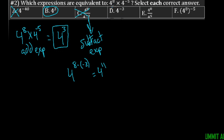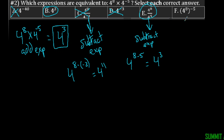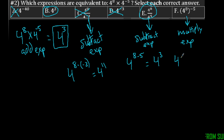For D, it already has four to the negative third, which is not what we're going to pick. For E, same idea — we subtract exponents, so we have four to the eighth minus five, which is four to the third. That one's good. And the last option would mean multiplying exponents giving four to the negative fortieth power, which is not what we're looking for. So for this one, we have two answers: B and E.